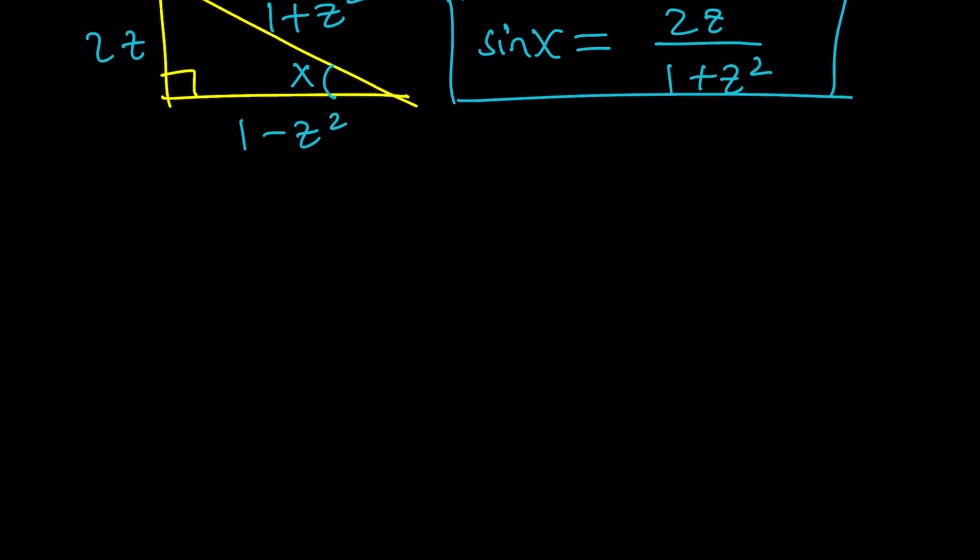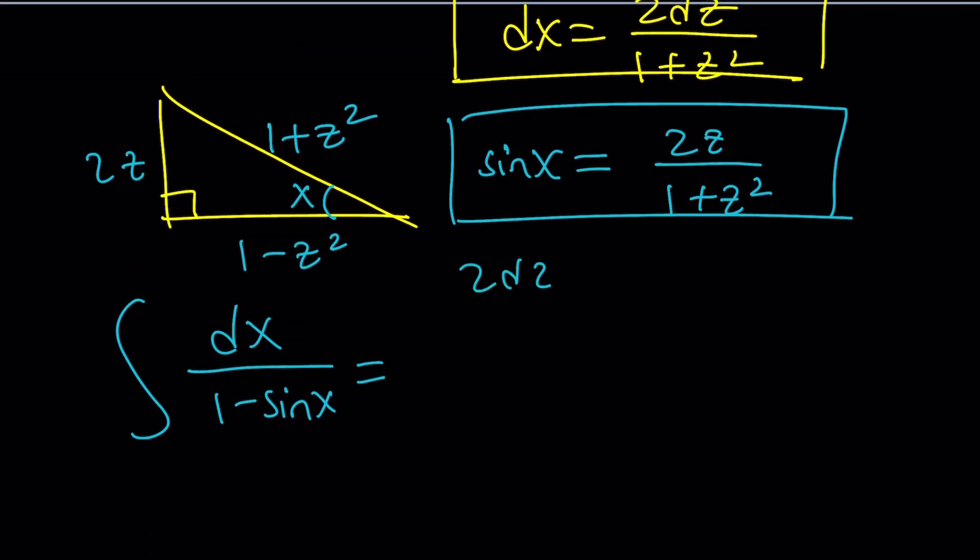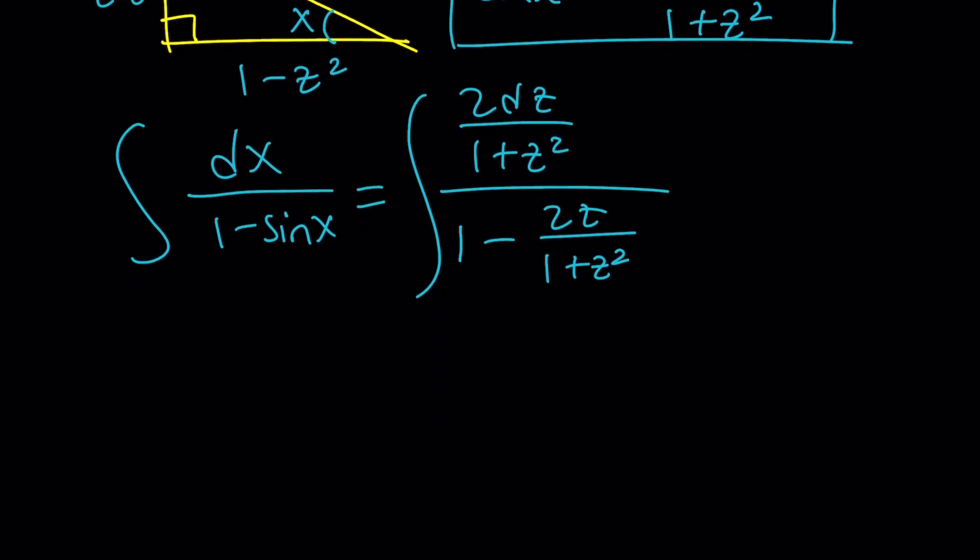Let's go ahead and substitute everything so that dx over 1 minus sin x turns into the following. dx will be replaced with 2dz over 1 plus z squared. And the sin x will be replaced with 2z over 1 plus z squared. So notice that the sin x and dx are very similar, right? So now we're going to go ahead and integrate it. We have dz. 1 plus z squared cancels out. But let's go ahead and make a common denominator first.